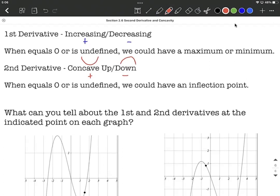And you can only get an inflection point where your concavity would change from concave up to concave down or vice versa if the second derivative equals zero or is undefined, at that value for x.